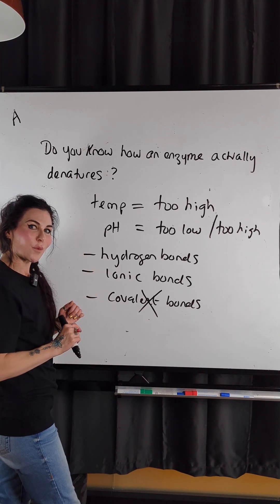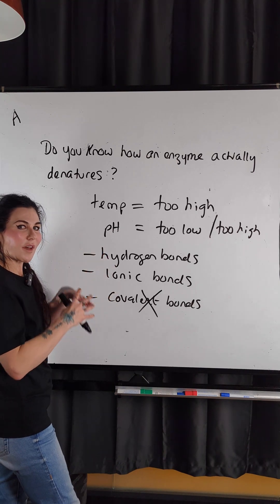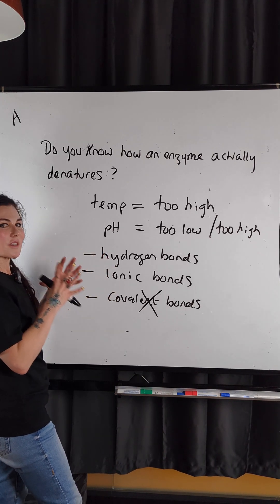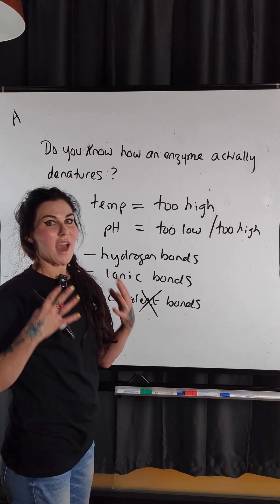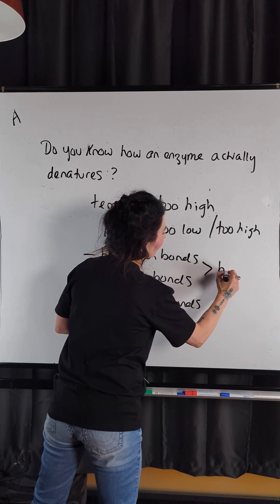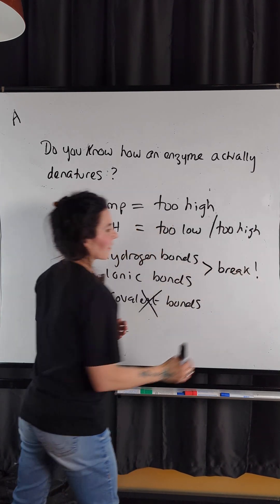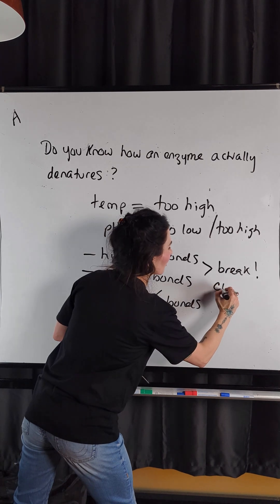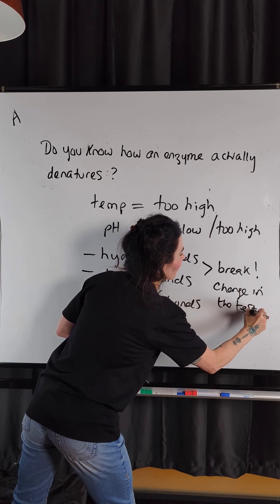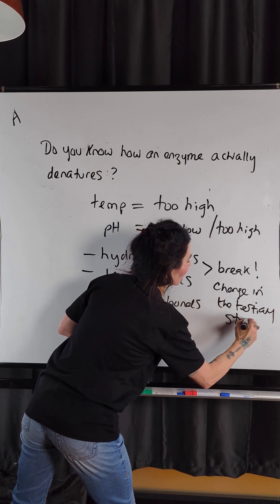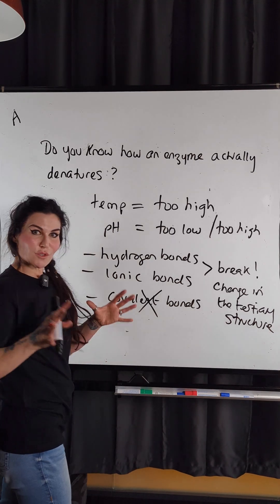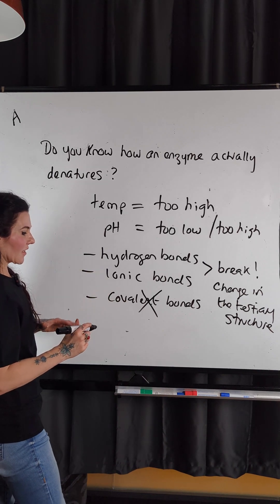If hydrogen bonds and ionic bonds are interfered with, then that 3D shape — that tertiary structure — starts to change. And as it changes, it changes everything. So if these bonds break, we end up with a change in the tertiary structure of the enzyme, which is going to ultimately affect its active site.